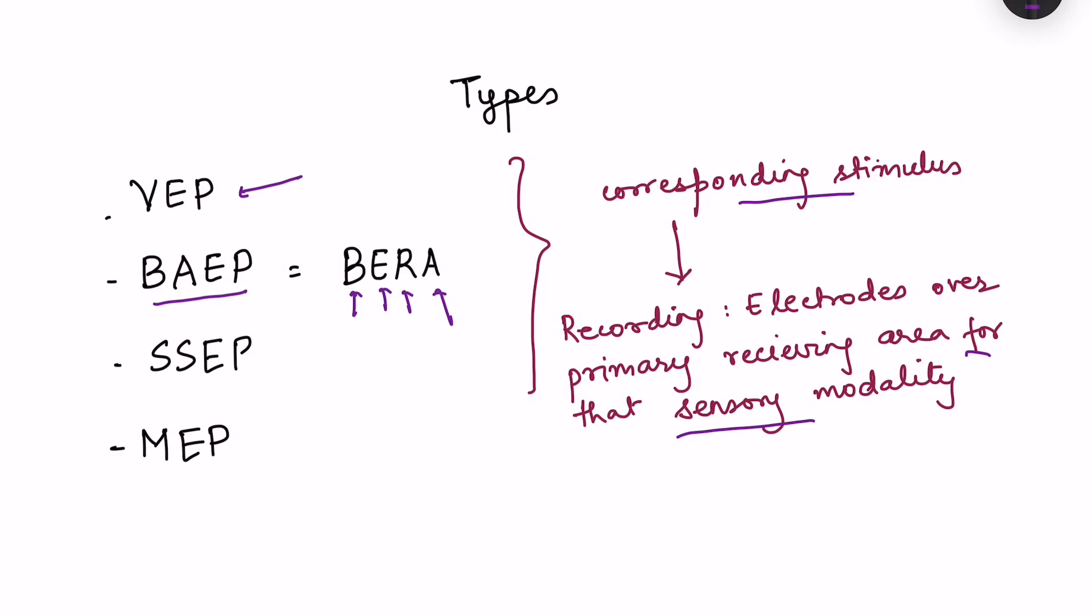Similarly, there is brain stem auditory evoked potential, also known as brain stem evoked response audiometry. In this, auditory stimulus is given like clicks and response is made from the brain stem regions. Then there is somatosensory evoked potential. The stimulus is basically electrical stimulation of a sensory nerve, maybe median nerve or another nerve in the upper limb, and in lower limb also tibial nerve can be recorded. The recording is from the parietal cortex, that is the somatosensory area.